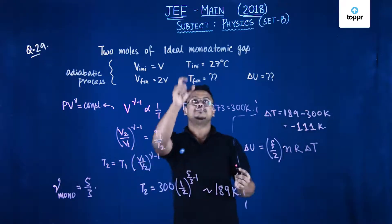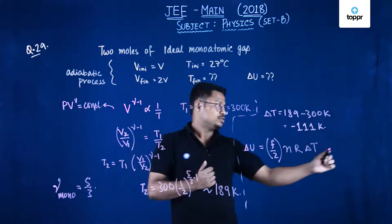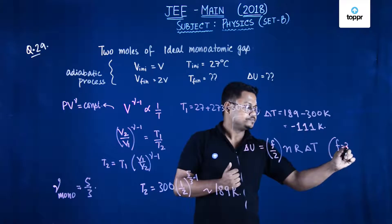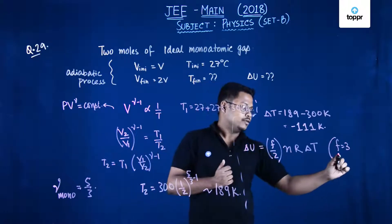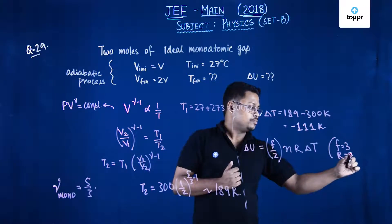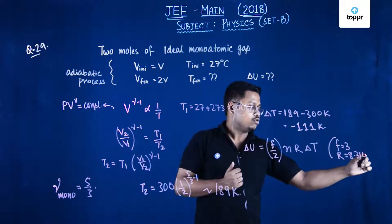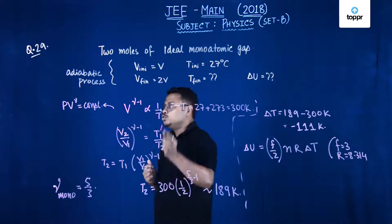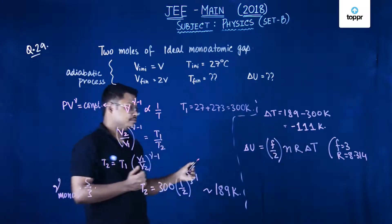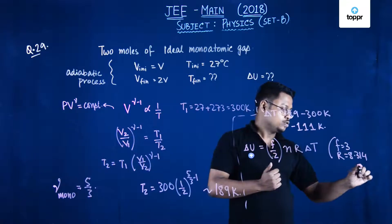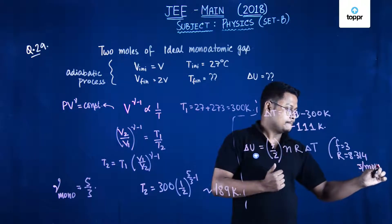So what is F in this monoatomic gas? It is 3. So the value of F is 3. Value of R is 8.314 in terms of joule per mole Kelvin, 8.314 joule per mole Kelvin.